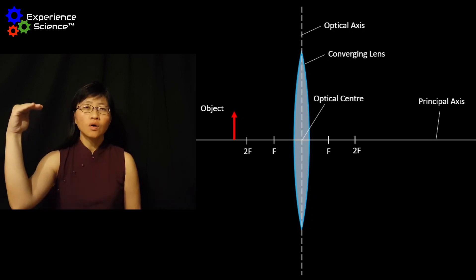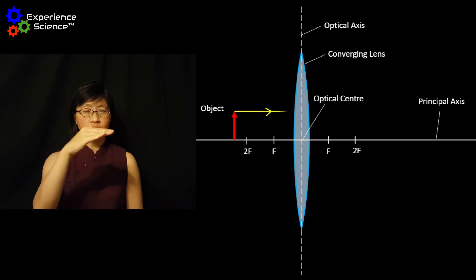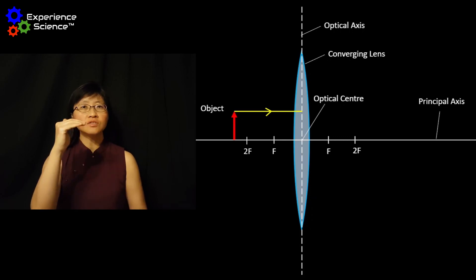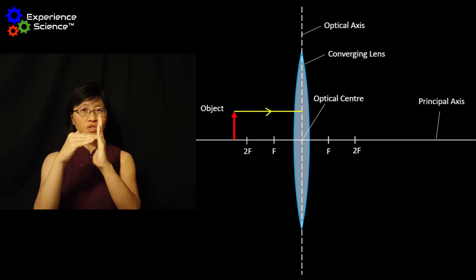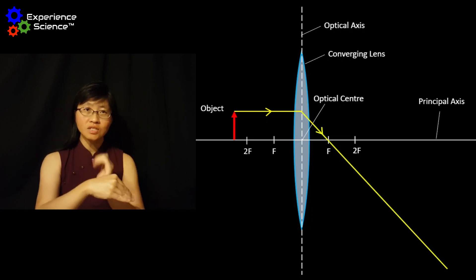The first one will travel parallel to the principal axis until it hits the optical axis of the lens. It will then pass through the focal point of the lens.